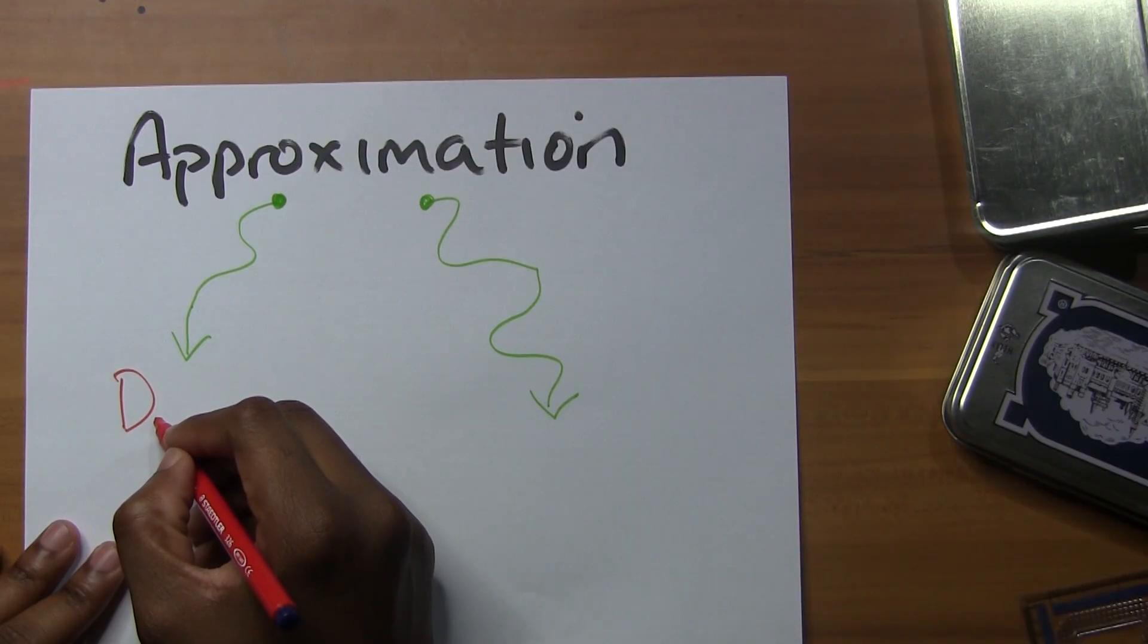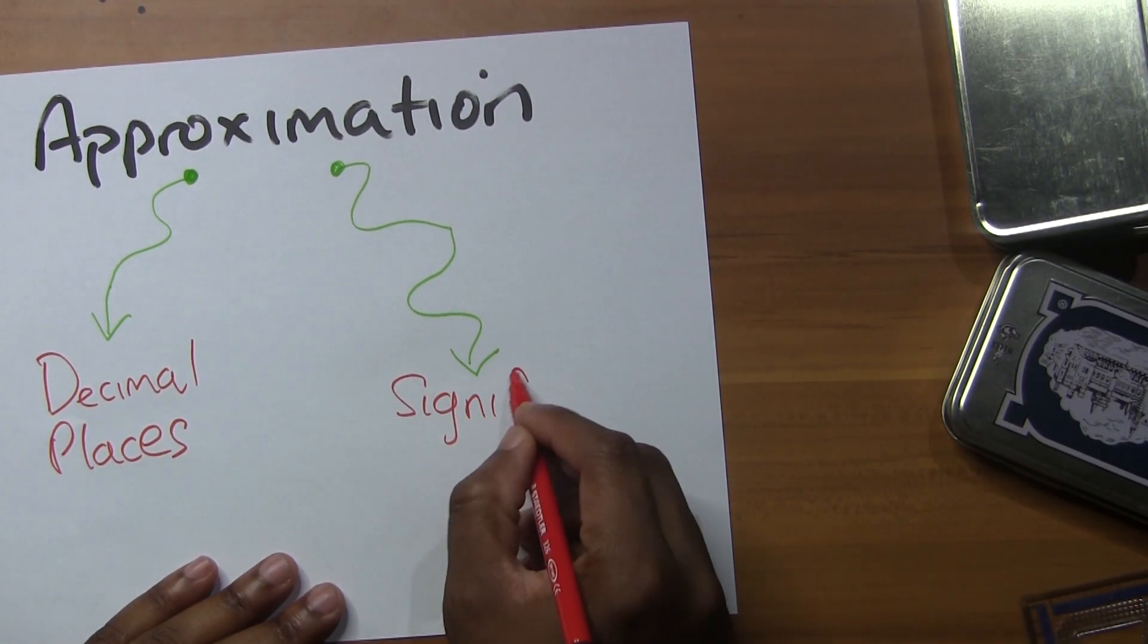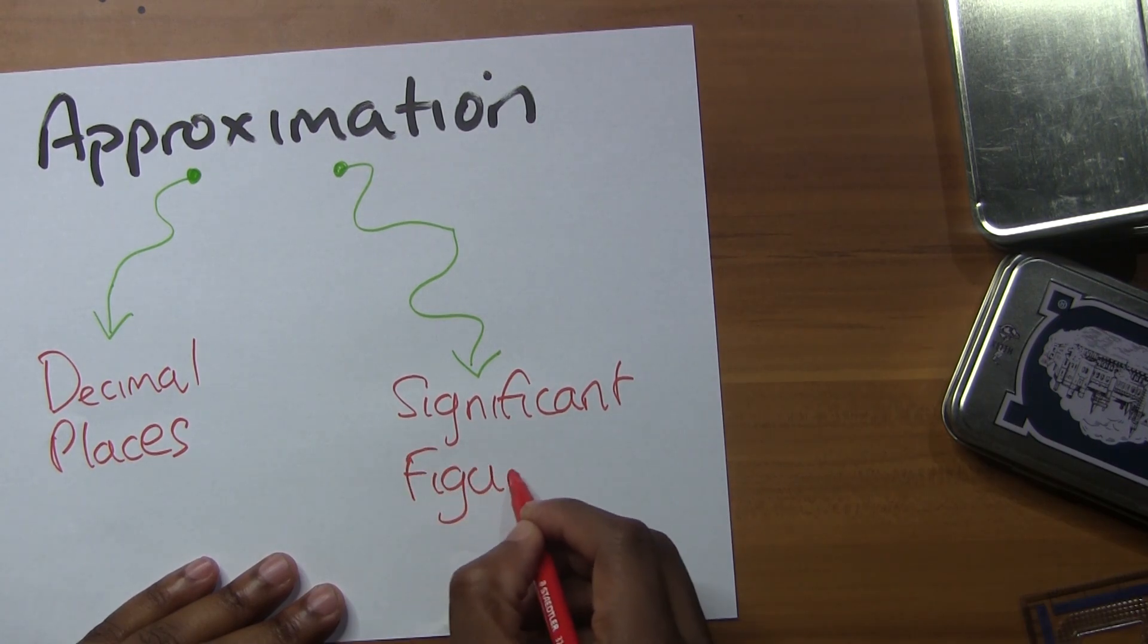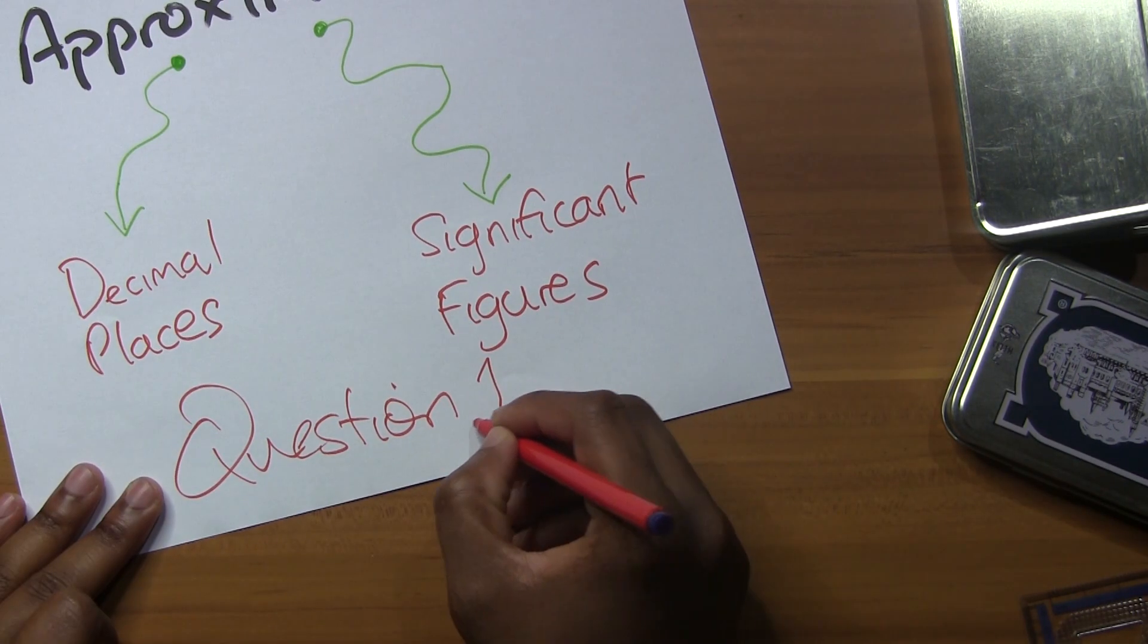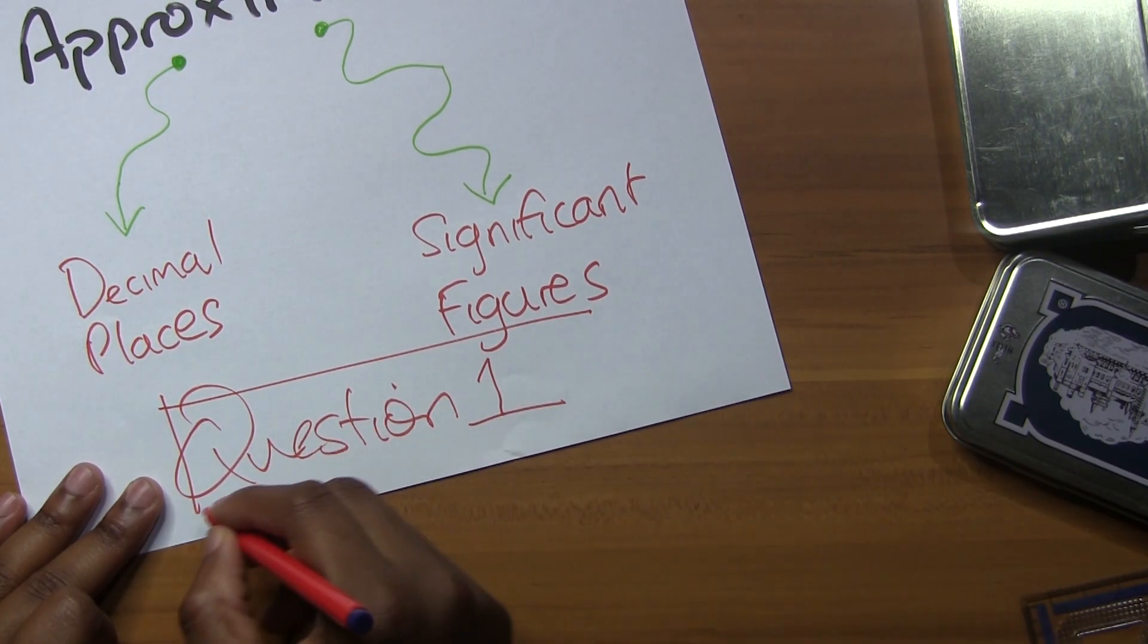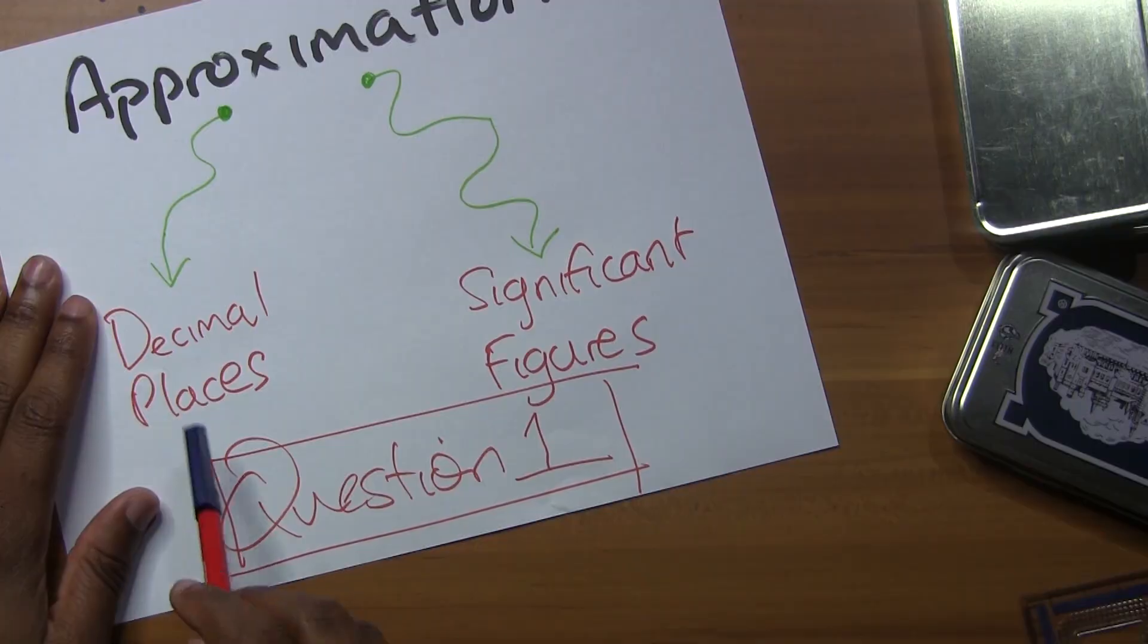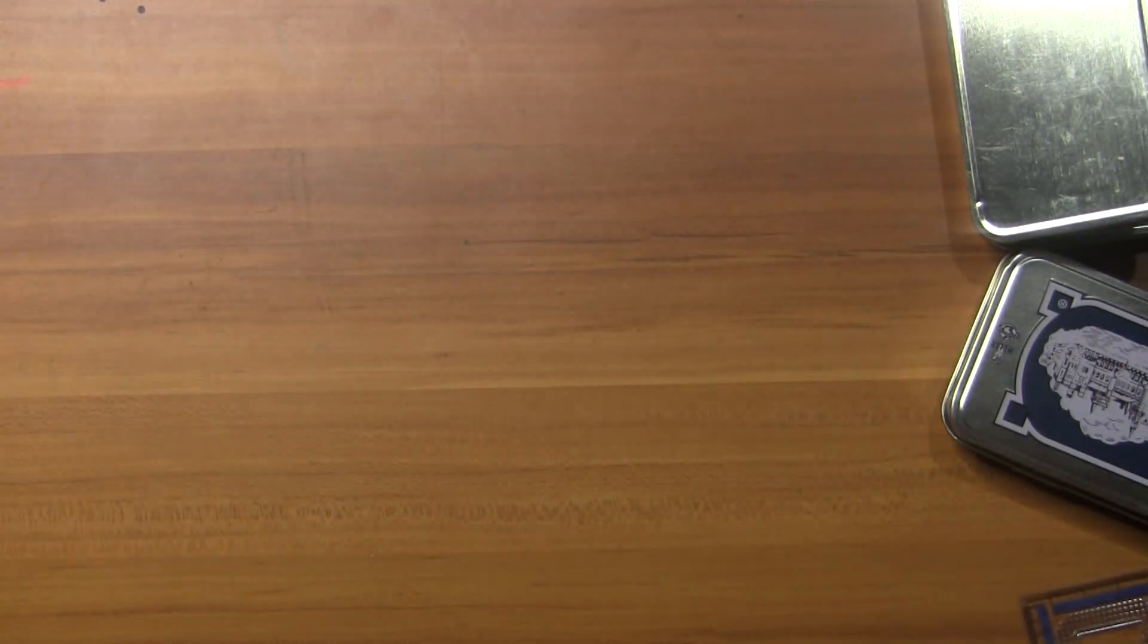That's what significant figures is about. Significant figures is just a fancy type of approximation. You have decimal places and you have significant figures, and these are gonna appear in question one of your maths paper. You need to know how to approximate to a certain number of significant figures. Let's try some examples.